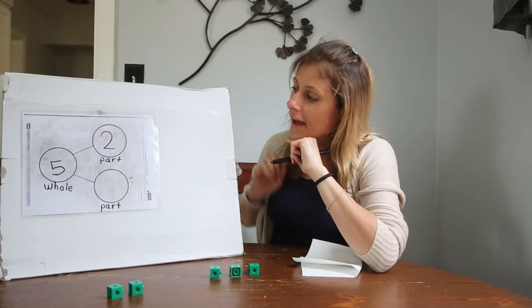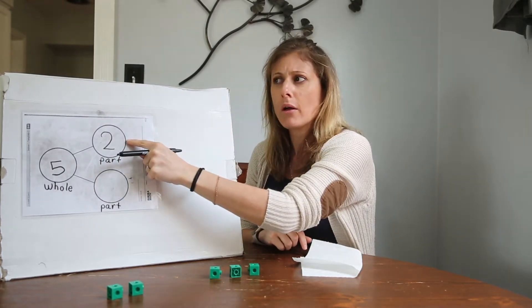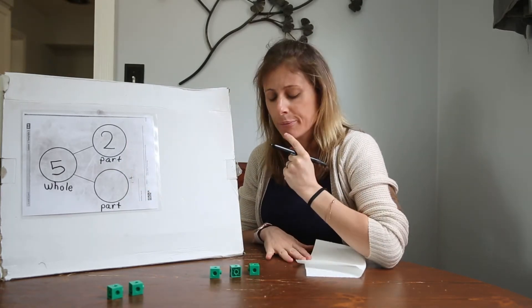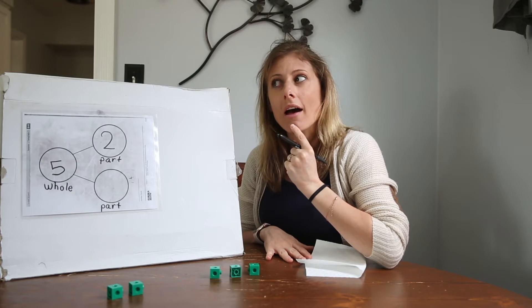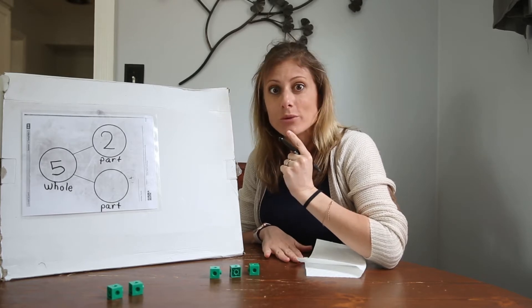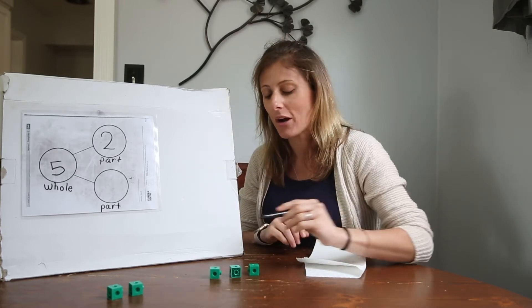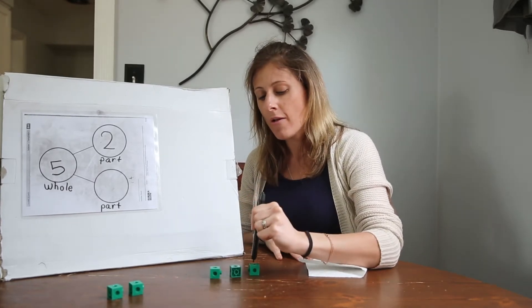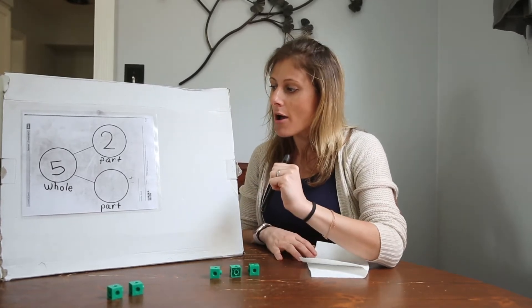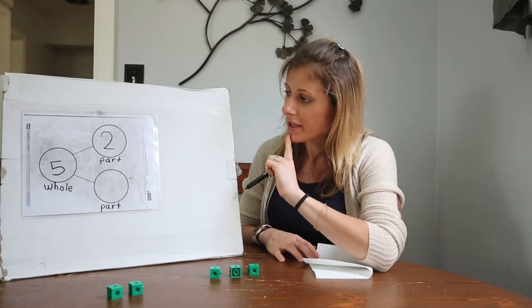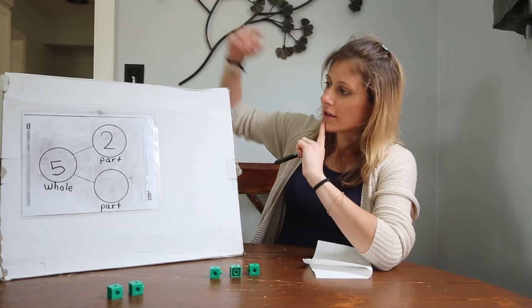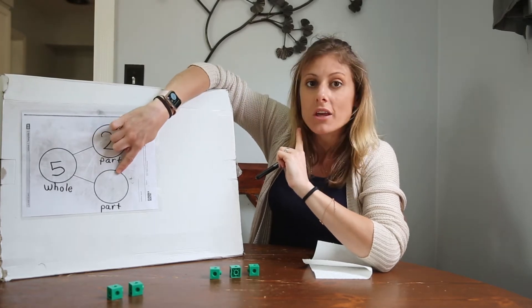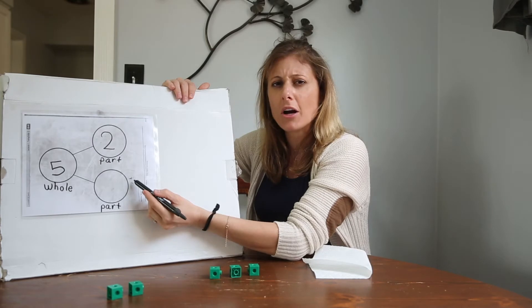So if I have two in one group, how many do I have in my other group? I know what I'm gonna do. I'm gonna count to see how many is in the other part. Count with me. One, two, three. I wonder where the three goes. This is where one part goes. It must go here where there's a blank spot. This is my other part.